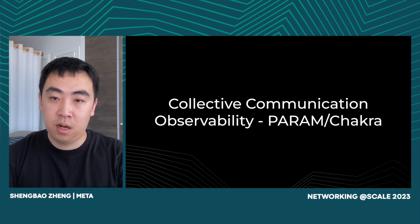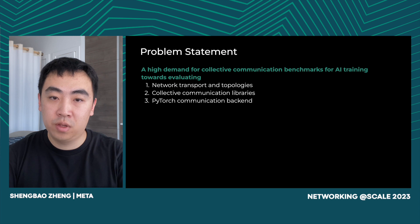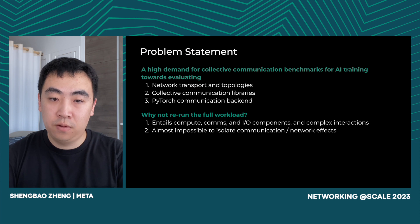By now, we have talked about the observability on RDMA networks. Next, I will talk about how to leverage PARAM and Chakra to understand collective communication behaviors. There has been a growth in demand for collective communication benchmarks for AI training workloads towards evaluating network transport and topologies, for example single-hop vs. multi-hop RoCE analysis; communication libraries such as NCCL, UCC, and MPI; and the PyTorch communication backend. Rerunning the full workload entails compute, comms, and IO components and complex interactions between them, making it almost impossible to isolate communication or network effects.